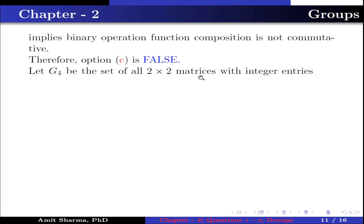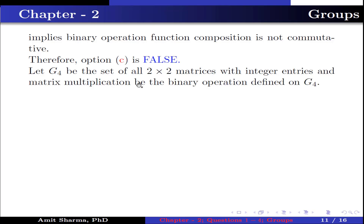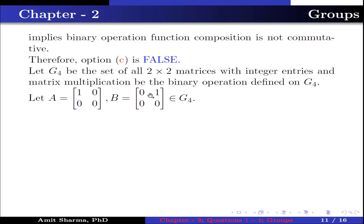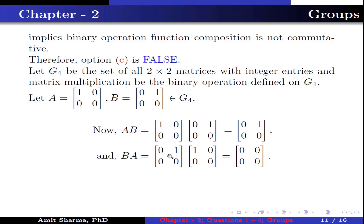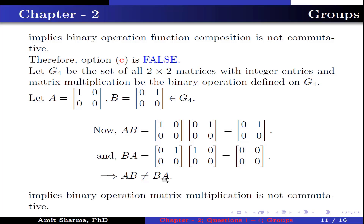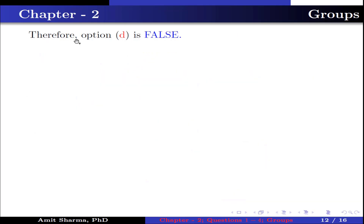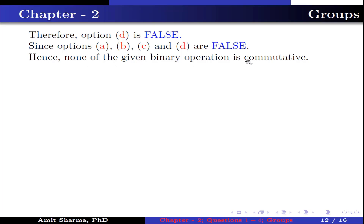Let G4 be the set of all 2×2 matrices with integer entries and matrix multiplication be the binary operation defined on G4. Let A = [[1,0],[0,0]] and B = [[0,1],[0,0]] belong to G4. Now AB = [[0,1],[0,0]], but BA = [[0,0],[0,0]], the null matrix. This implies AB ≠ BA, so binary operation matrix multiplication is not commutative. Therefore option D is false. Hence none of the given binary operations is commutative.